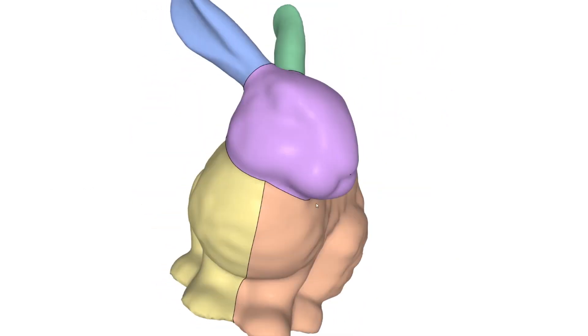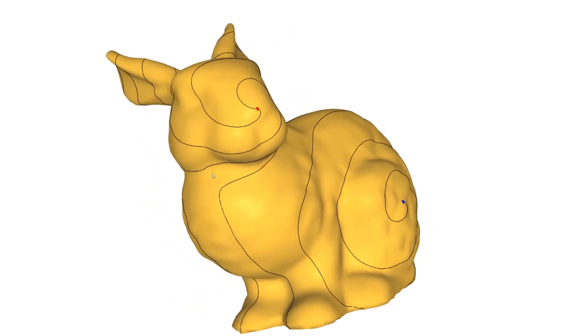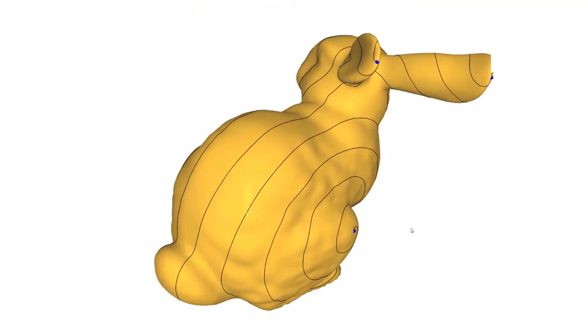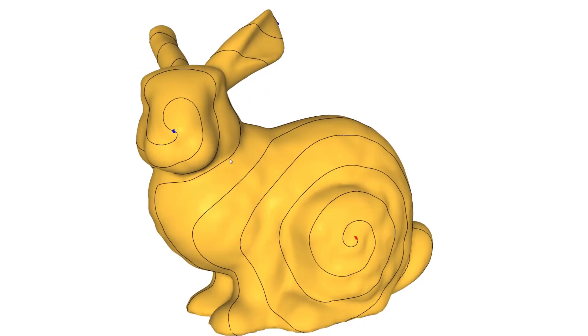After computing a special type of global parametrization based on the partitioning, we can quickly generate a single spiraling zipper curve that covers the entire surface. Our application allows us to manually tweak the curve.